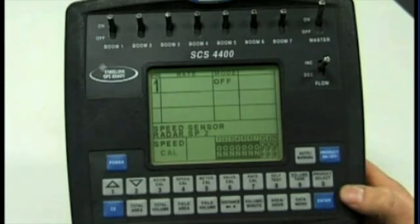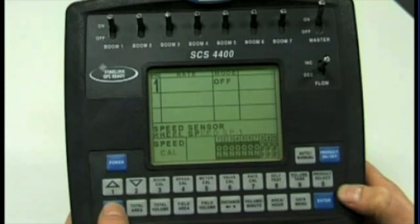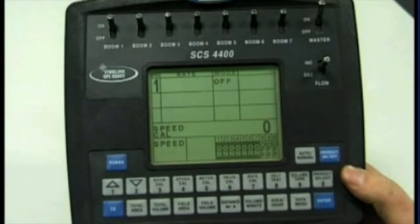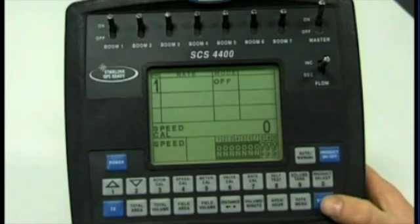After you've got the rate, it will ask you to select speed sensor type. It'll be either radar or wheel speed sensor. Again, use the CE button to scroll between the two. If it's on wheel speed, press enter.